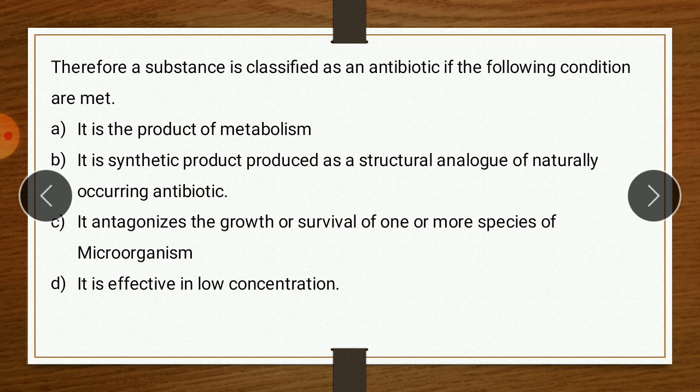A substance is classified as antibiotic if the following conditions are met: first, it is a product of metabolism; second, it is a synthetic product produced as a structural analog of a naturally occurring antibiotic; third, it antagonizes the growth or survival of one or more species of microorganism; and fourth, it is effective in low concentration. In short, antibiotics are substances which have the ability to kill or inhibit other microorganisms in low concentration, with synthetic and semi-synthetic derivatives now included in the definition.